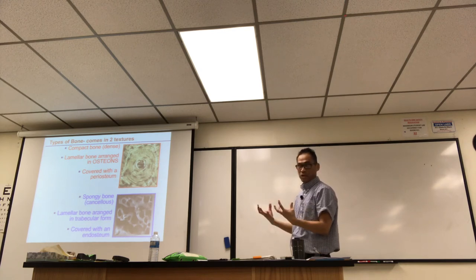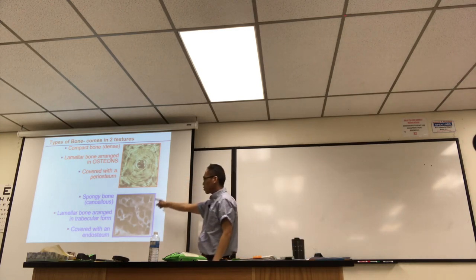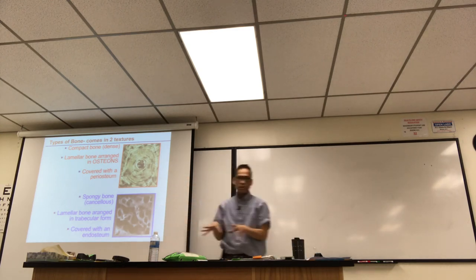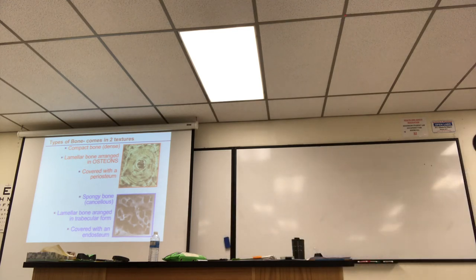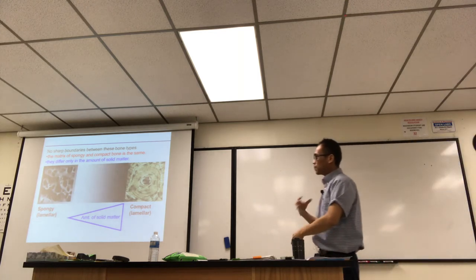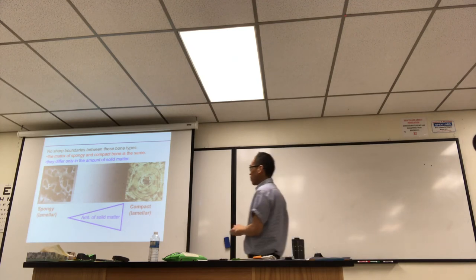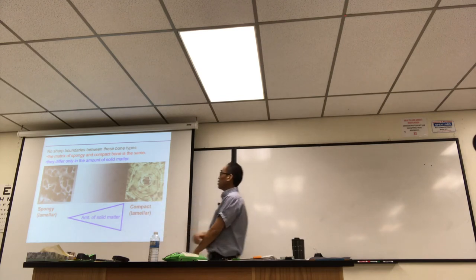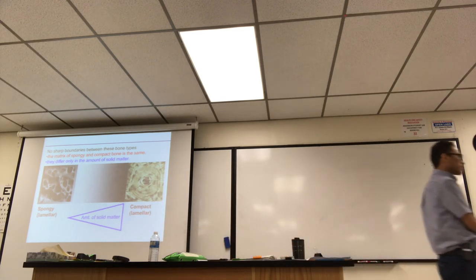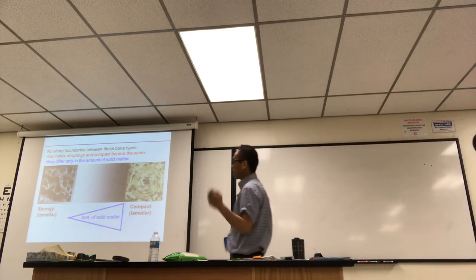The different kinds of bone — spongy and compact — have the same composition in terms of organic and inorganic matrix. The only difference is the arrangement: osteons in compact bone versus trabecular bone in spongy bone. They only differ in the amount of solid matter. We want bones hollowed out with the medullary cavity or spongy on the inside so they don't weigh us down, while compact bone is arranged in sturdy osteons.